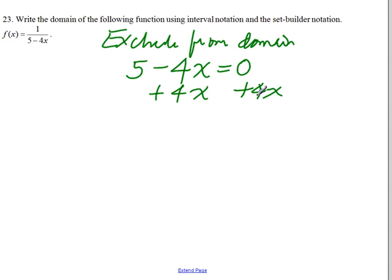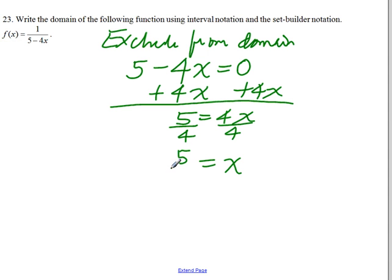and we have 5 equals 4x, so x equals 5 over 4. That x value must be excluded from the domain.